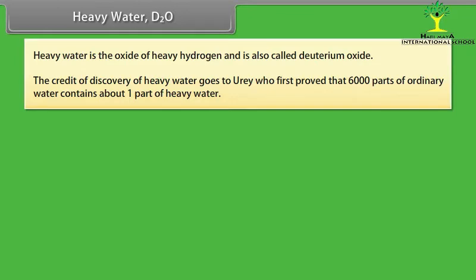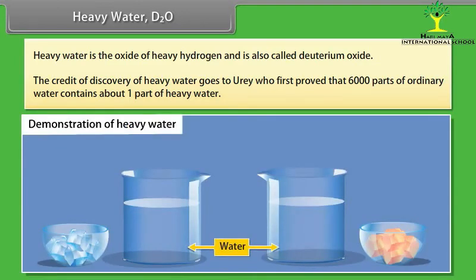Demonstration of heavy water: Firstly, take two beakers filled with water. Drop an ice cube which is blue in color in the first beaker and see that ice floats on water. In another beaker, drop another ice cube which is red in color of heavy water D2O. You will see that the ice cube sinks in the water. This is due to the fact that deuterium is heavier isotope than hydrogen and it changes physical and chemical properties of water.